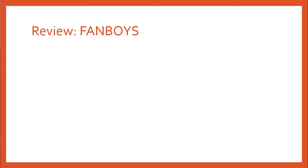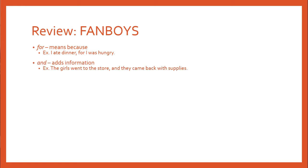Now, before we go into new information about when to use commas, I wanted to review very quickly FANBOYS — the coordinating conjunctions — and what all of them are used for. The F in FANBOYS stands for 'for,' which means 'because.' An example: 'I ate dinner, for I was hungry.' This is a way that nobody really speaks anymore — it's much more common to say 'because' — but it's important to be aware this structure exists. The A stands for 'and,' which is used to add information: 'The girls went to the store, and they came back with supplies.'